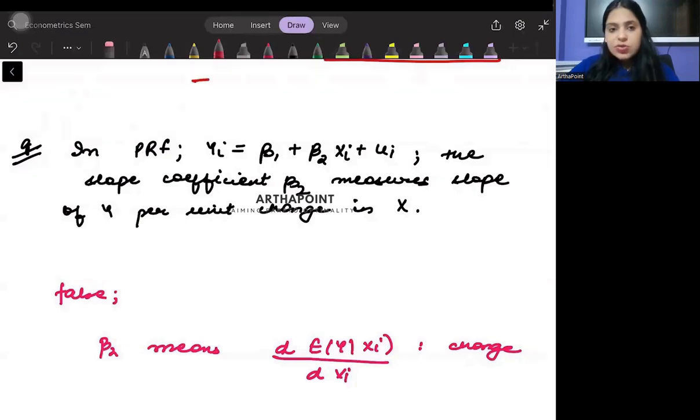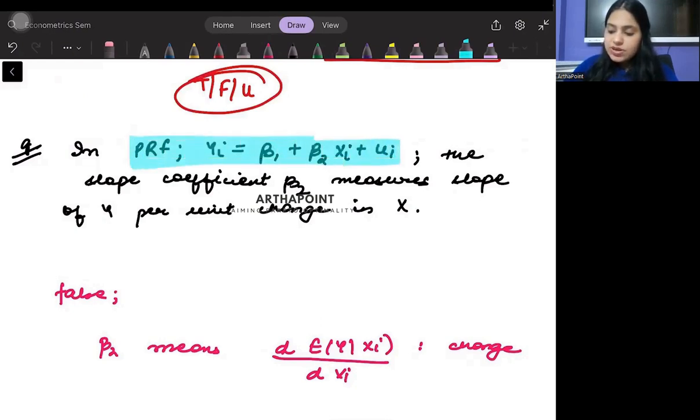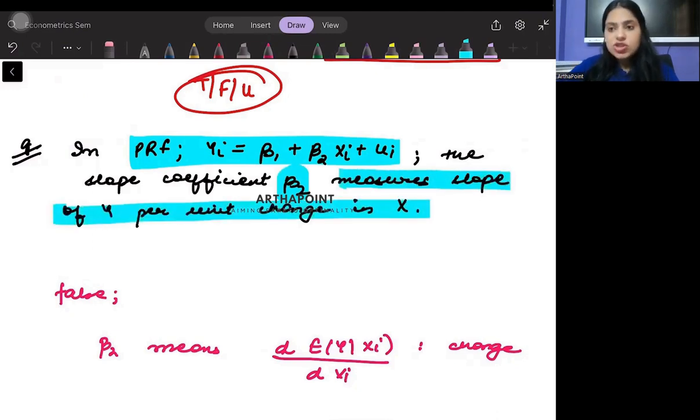Look into the statement beta. You need to tell whether the statement is true, false, or uncertain. The statement is saying in population regression function, yi equals beta 1 plus beta 2 xi plus ui. The slope coefficient beta 2 measures slope of y per unit change in xi.